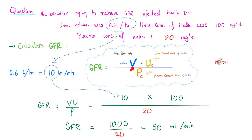So V is 10 mL per minute. We have the urine concentration of inulin — that's 100 — and the plasma concentration of inulin — that's 20. Plug in the numbers and the GFR is 50 mL per minute. Not the best GFR in a human being, to be frank, although you have to take into account the age of the patient.